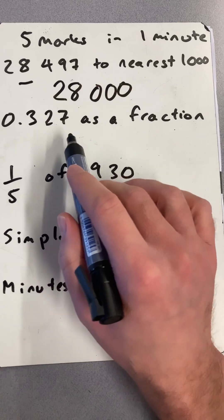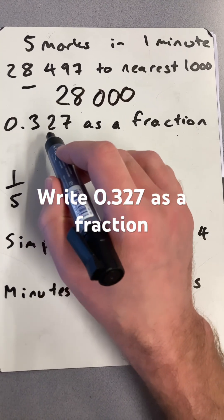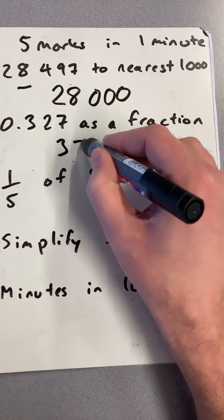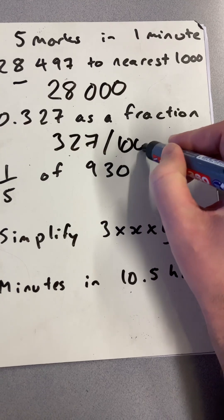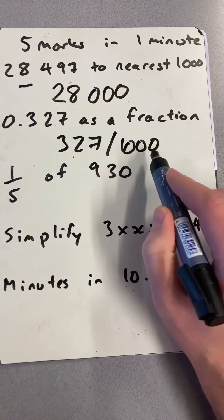Then write 0.327 as a fraction. That's tens, hundreds, thousands, so it's 327 over 1000. There's no way to simplify that any further, so leave that as a fraction.